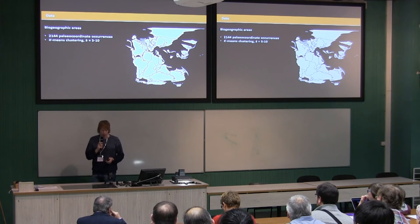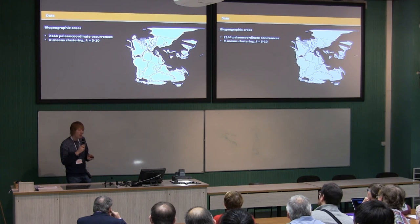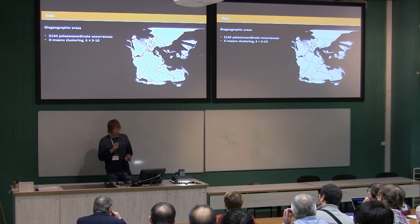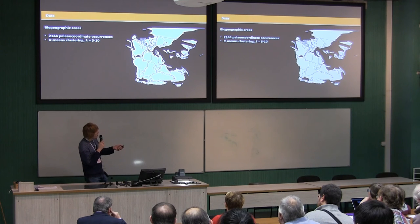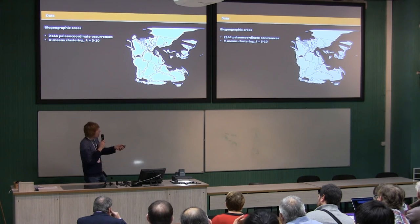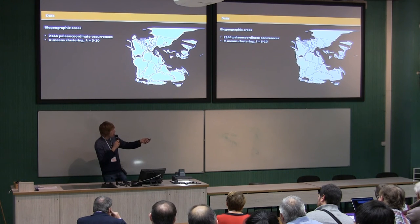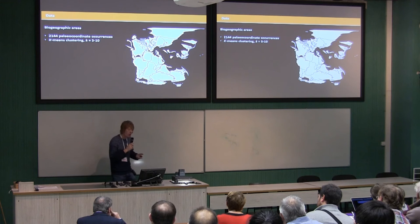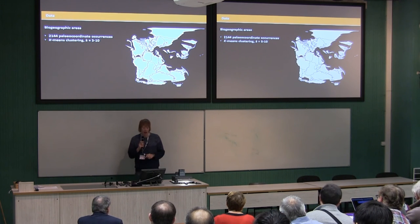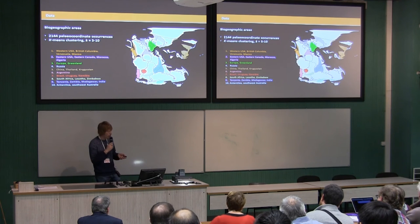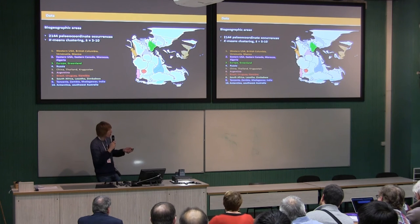For most biogeographic analyses you have to define biogeographic areas. Classically people have done this using modern continental areas such as Africa, North America, South America, and so on. This is problematic on a supercontinent because an area in the eastern US is actually much closer to North Africa — somewhere like Morocco — than it is to southwest USA. So instead of using modern areas, we've defined novel biogeographic areas using cluster analysis with the paleo-coordinate data from the Paleobiology Database, resulting in areas that make more sense in the context of Pangaea — for example, eastern North America is grouped with Morocco and Algeria.